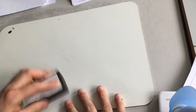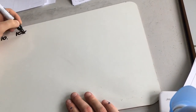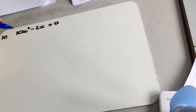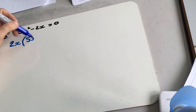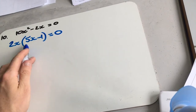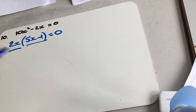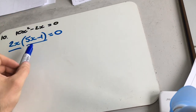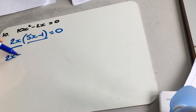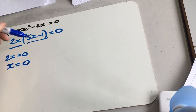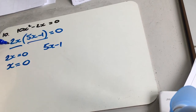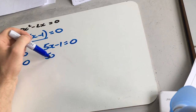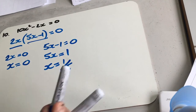The last three ask us to factorize and solve. Question 10: 10x squared minus 2x equals 0. Both terms have a 2 and an x in common, so we take out 2x: 2x(5x minus 1) equals 0. Because it equals 0, either 2x equals 0 or 5x minus 1 equals 0. From 2x equals 0, we get x equals 0. From 5x minus 1 equals 0, we add 1 and divide by 5 to get x equals one fifth. Notice when solving an equation, we must have equal signs in our answer.